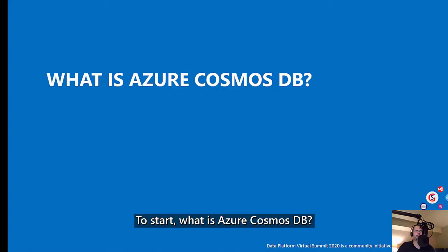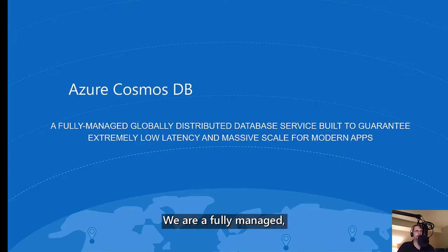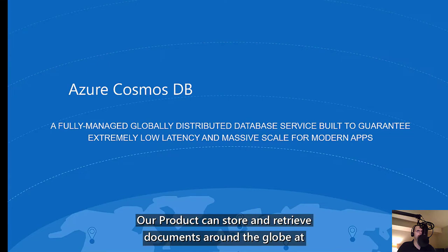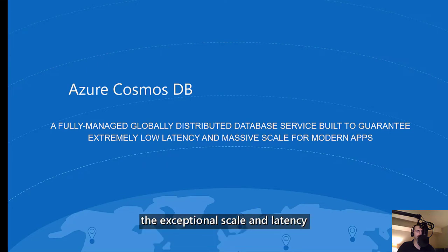To start, what is Azure Cosmos DB? We are a fully managed, globally distributed database service. Our product can store and retrieve documents around the globe at the exceptional scale and latency required for modern web applications.